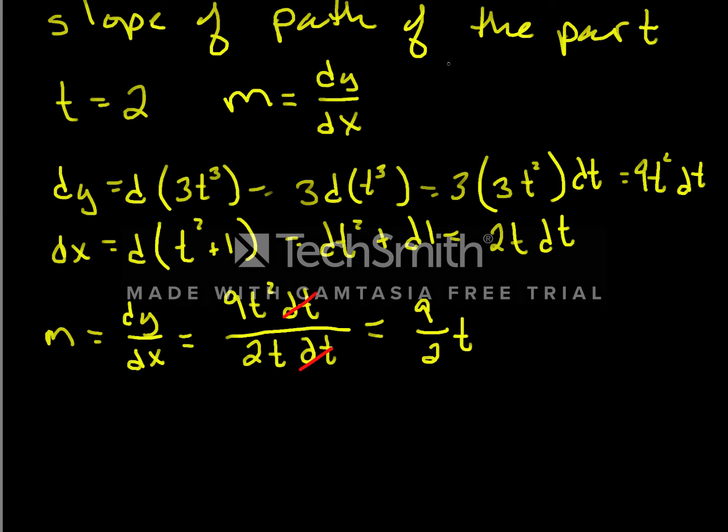So what is the slope of our path when t equals 2? Well, dy/dx when t equals 2 is equal to 9/2 times 2, which is 9. And that's the slope of our path.